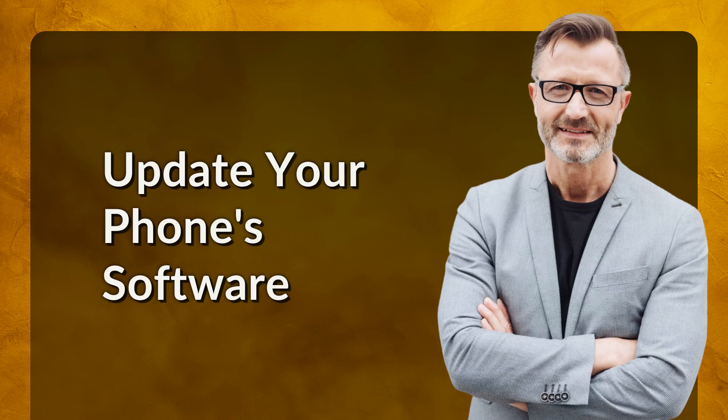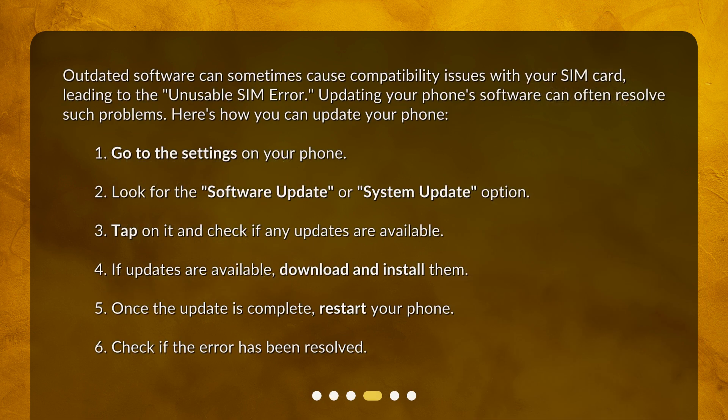Update your phone's software. Outdated software can sometimes cause compatibility issues with your SIM card, leading to the unusable SIM error. Updating your phone's software can often resolve such problems. Here's how you can update your phone: 1. Go to the settings on your phone. 2. Look for the 'software update' or 'system update' option. 3. Tap on it and check if any updates are available. 4. If updates are available, download and install them. 5. Once the update is complete, restart your phone. 6. Check if the error has been resolved.